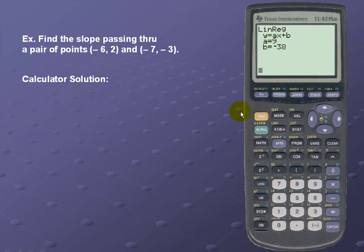For our next example, let's find the slope that passes through the pair of points (-6, 2) and (-7, -3). Once again here's the calculator solution.